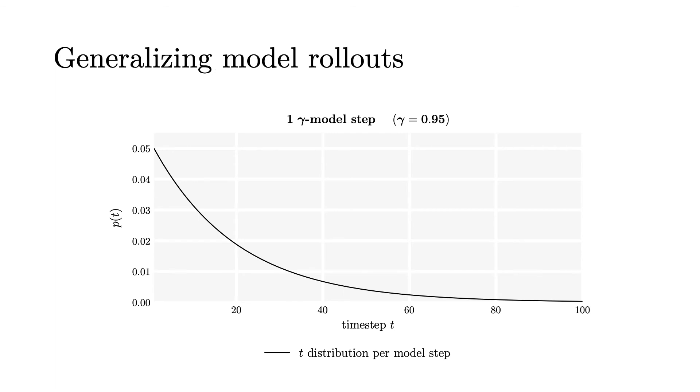Replacing standard single-step models with gamma models leads to generalizations of the procedures that form the foundation of model-based control. For example, we can derive a generalization of model-based rollouts.